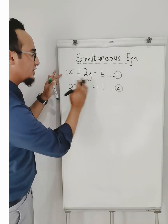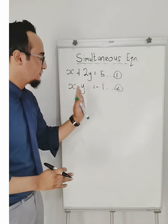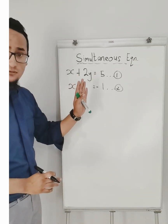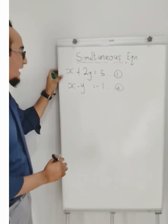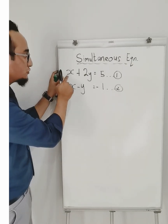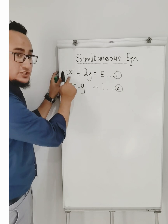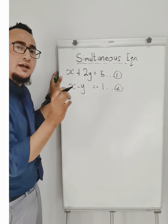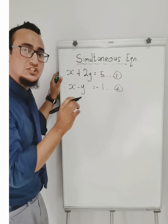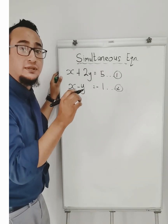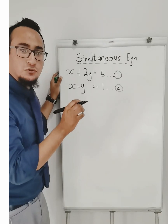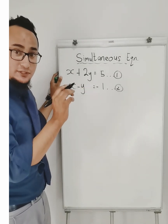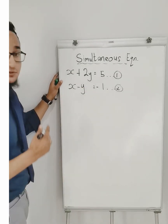Over here I have two unknowns in each of these equations — equation number one and equation number two. I'm first going to solve equation number one because that's the easy one to do, and my answer is not going to be a value but it's going to be an algebraic expression, and this is what I mean.